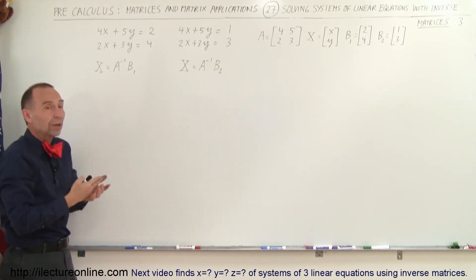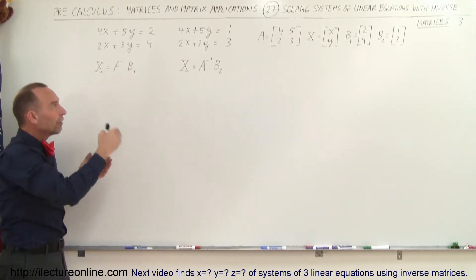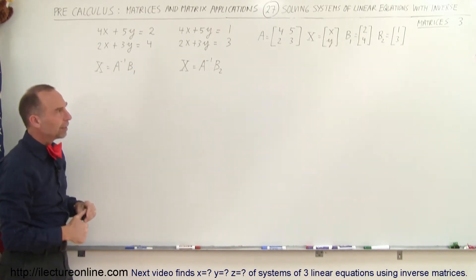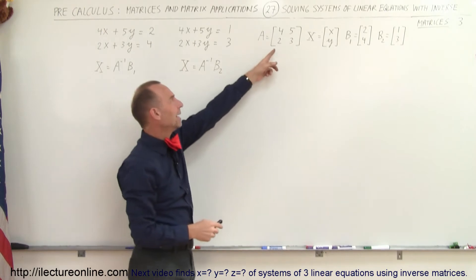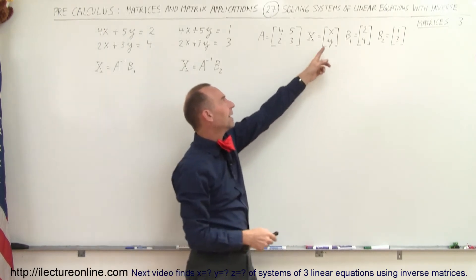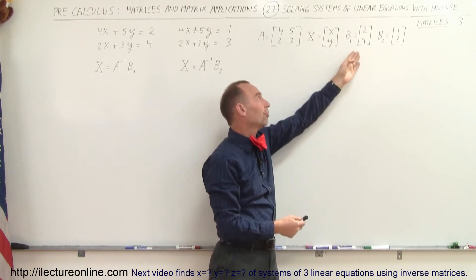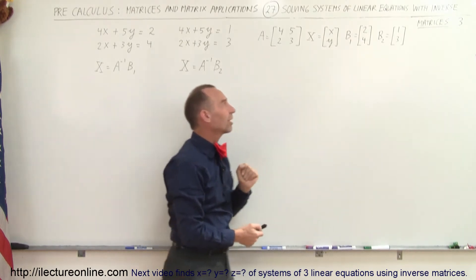And there are occasions where we want to do that. We want to compare all the various options that we may have in a particular situation. Notice that the A matrix is equal to this. The x matrix for both systems is equal to this. And now we have two B matrices, one for the first system and one for the second system.